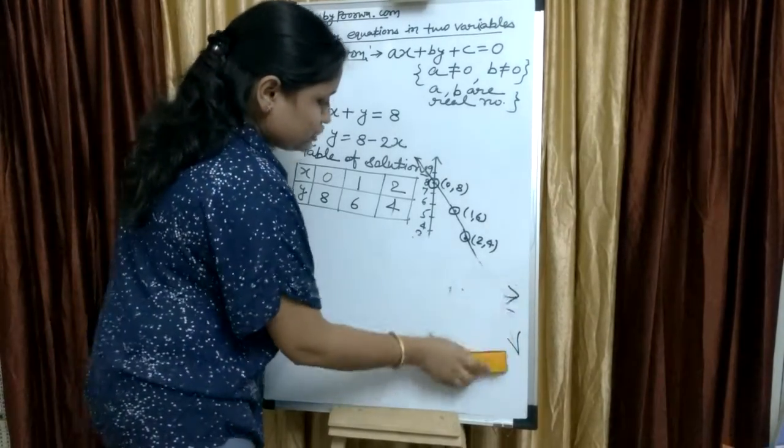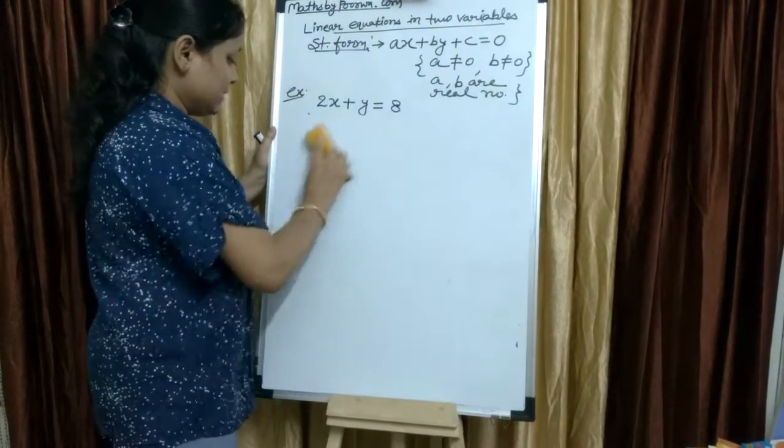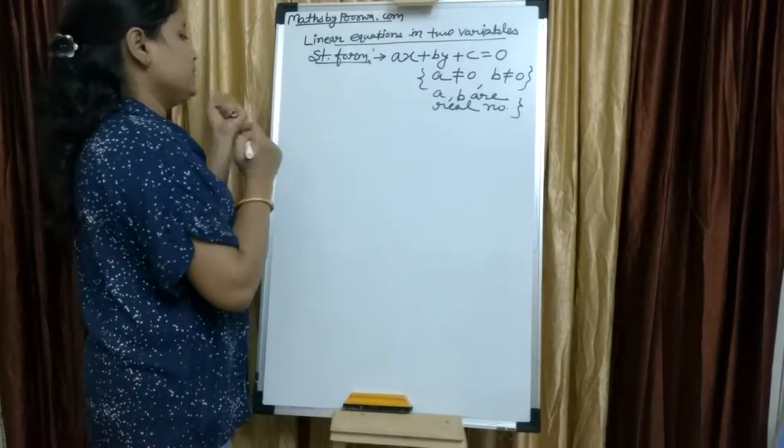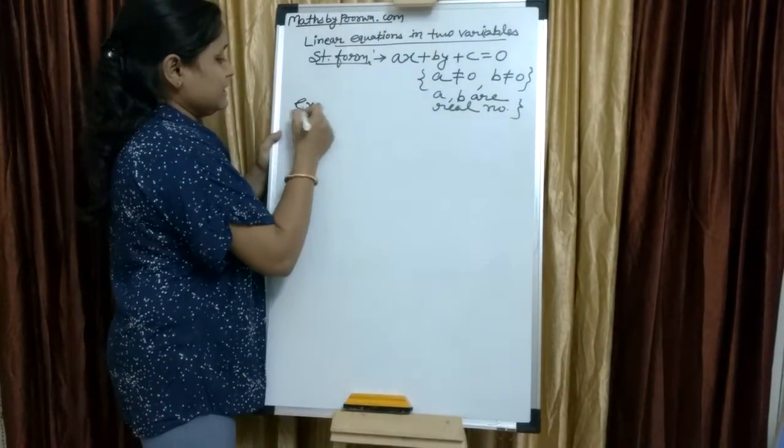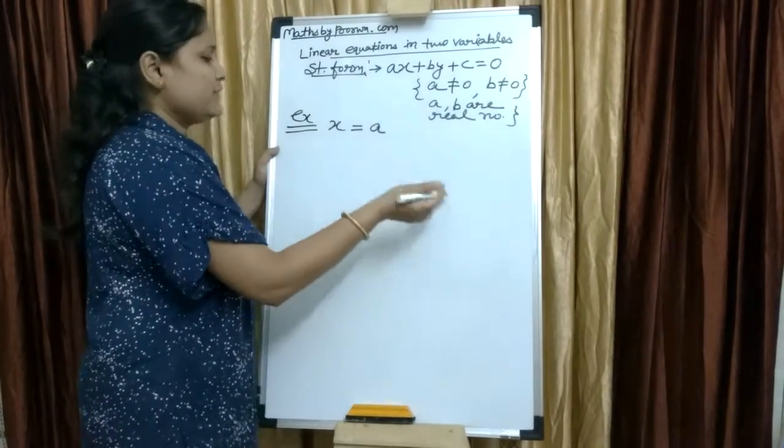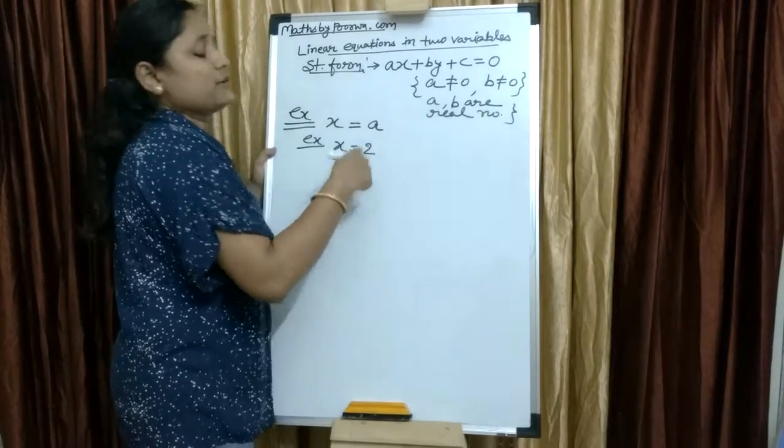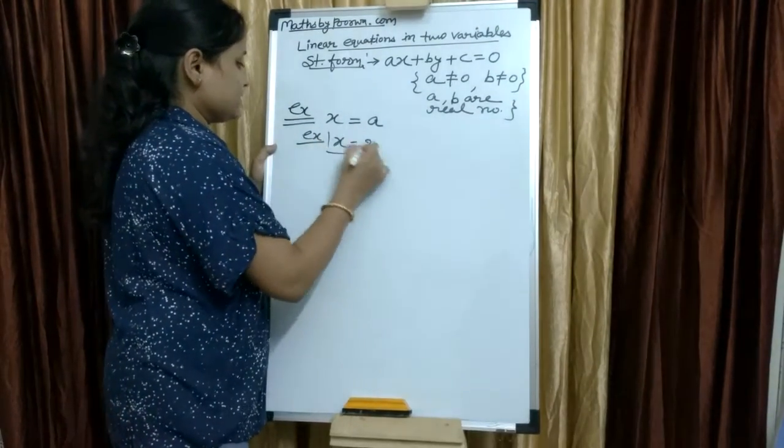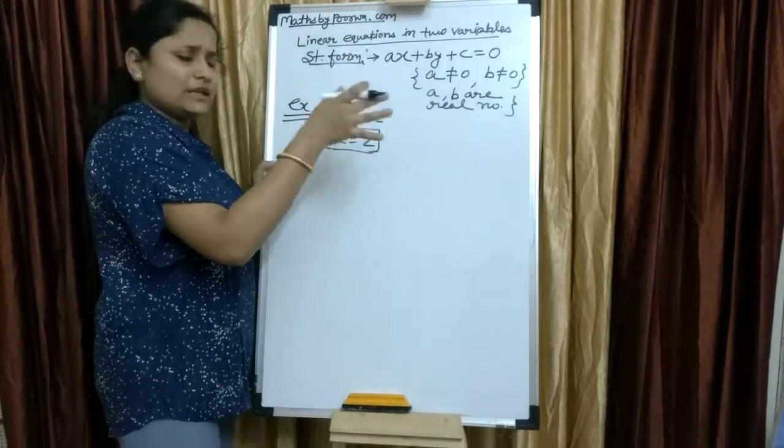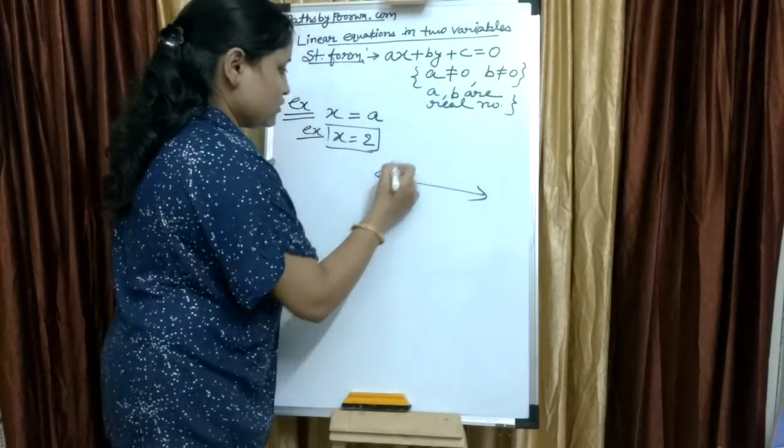Now, I will show you an example of x equals to a type graph and y equals to a type graph. If your equation is like this, x equals to a, here a is a real number. For example, x equals to 2, x equals to 3. We will take x equals to 2. Whenever you have x equals to a type graph, it can be negative or positive. Let's see how the graph will look.